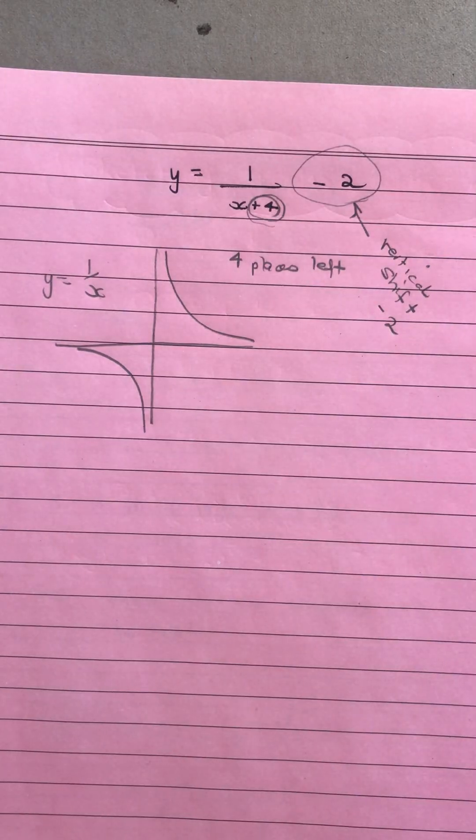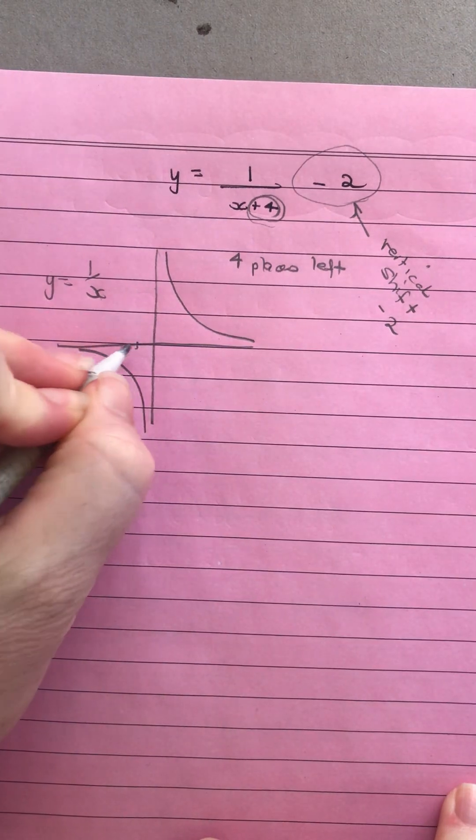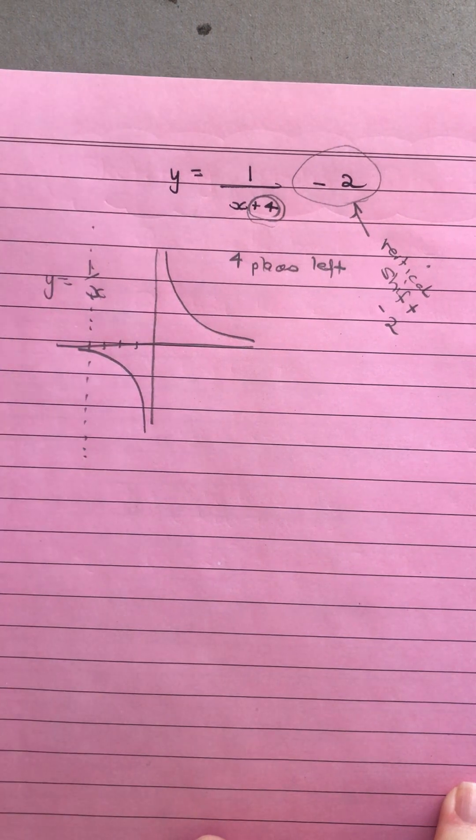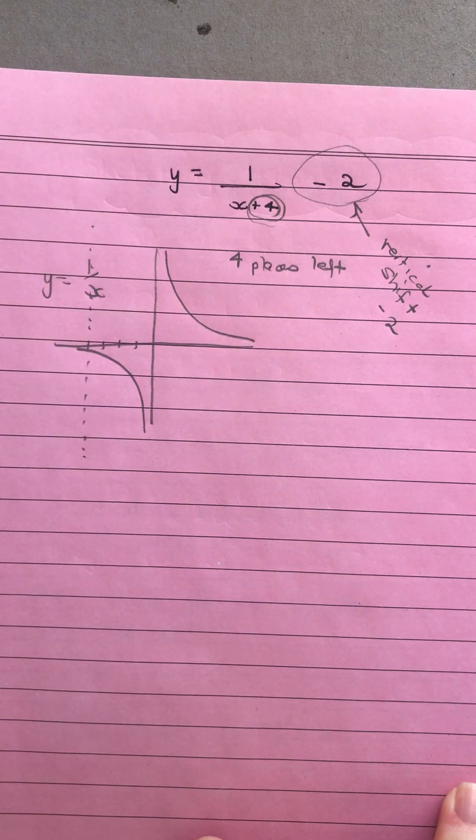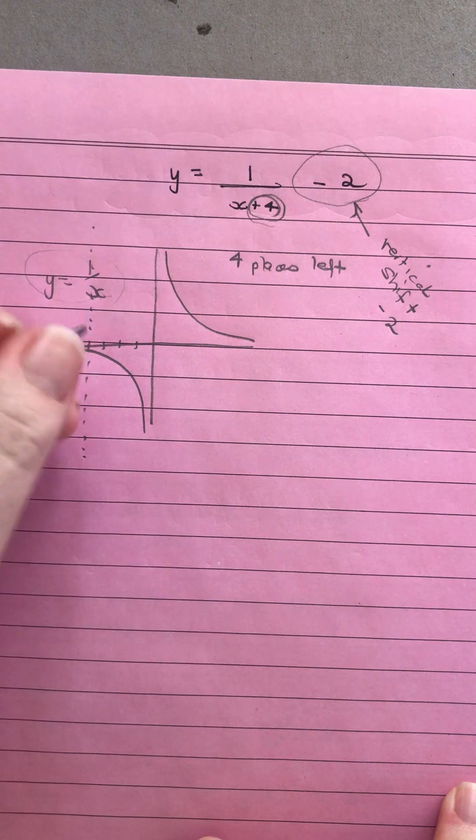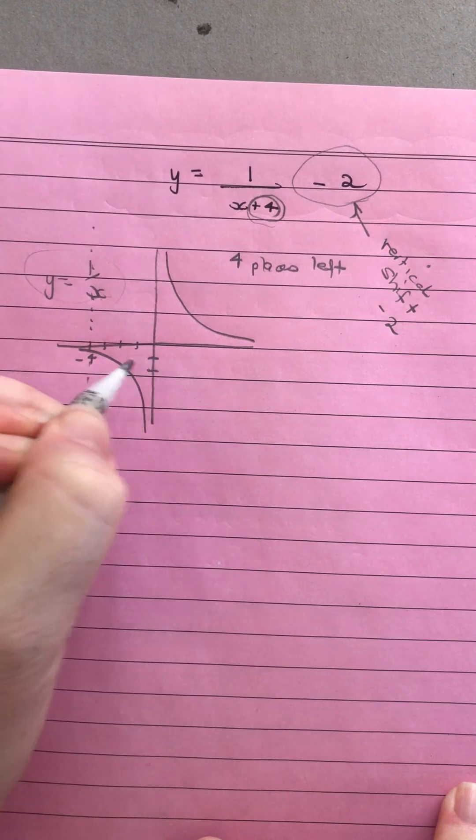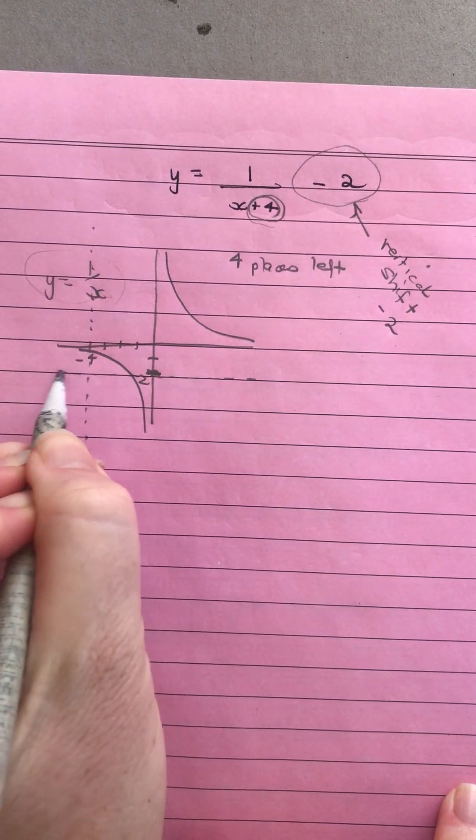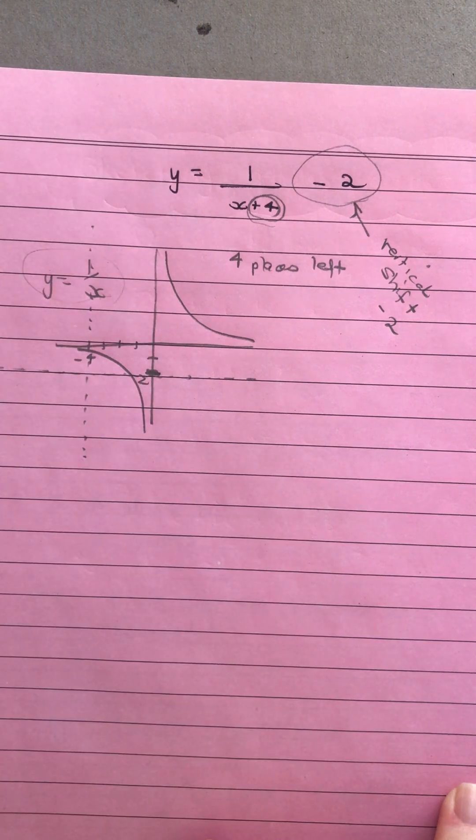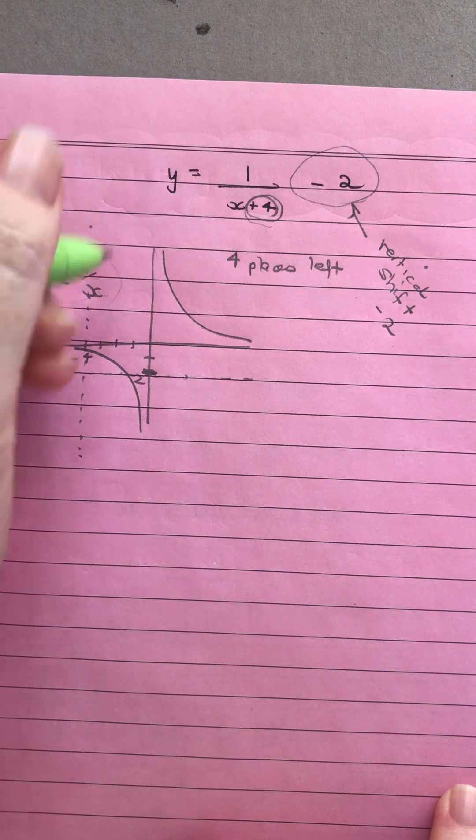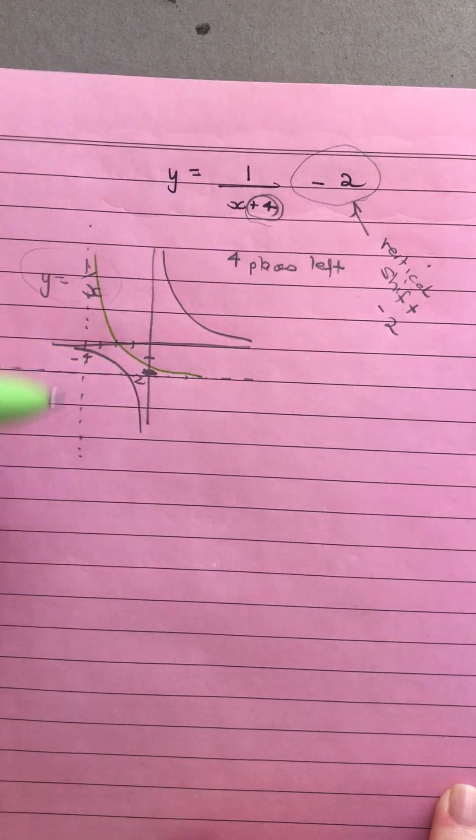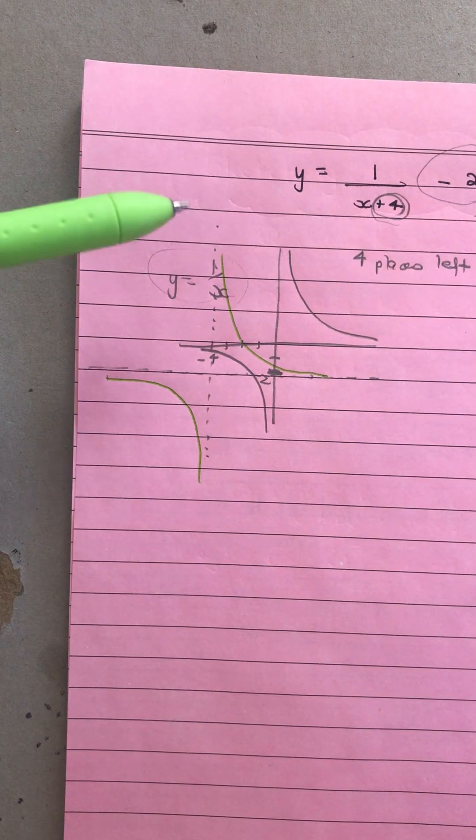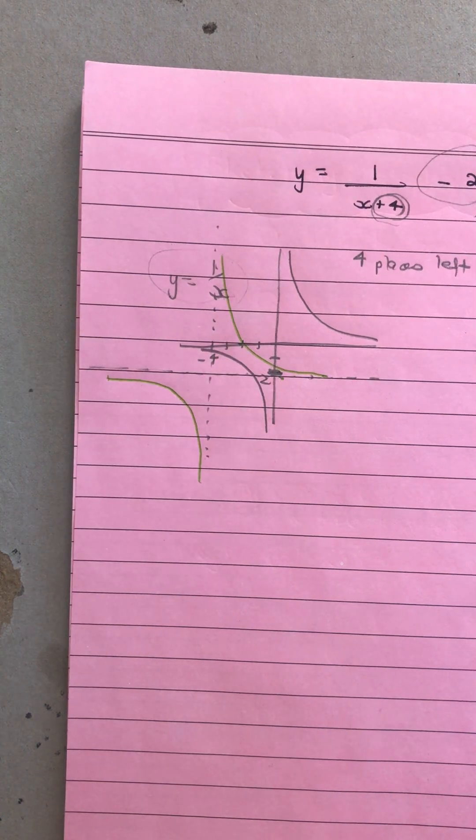So it's going to go down two. Sometimes when I do this one, I will get a dotted line and go okay, four places left: one, two, three, four, and put a little dotted line where the asymptote is moving to. So instead of being on the axis as it is in our $y = \frac{1}{x}$ version, we've now moved it over here to negative four, and we've moved down to negative two. Then I can come back and use a different color to draw in your transformed equation there.